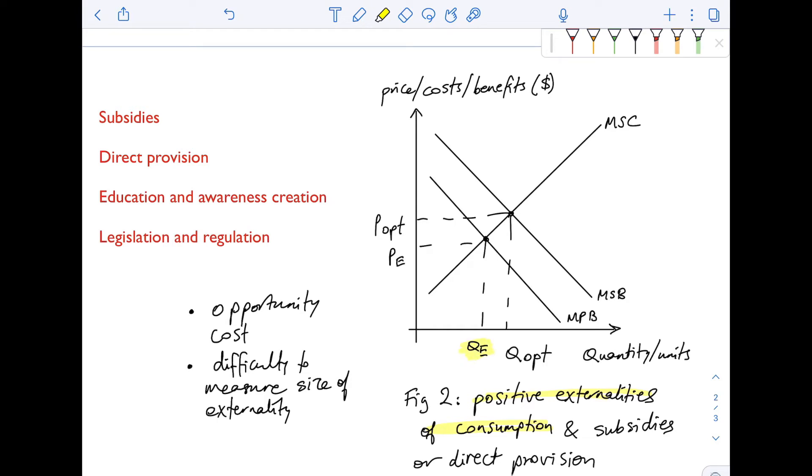QE, what the market is actually providing, is less than QOPT and PE is what the market is actually charging. It's also less than POPT.